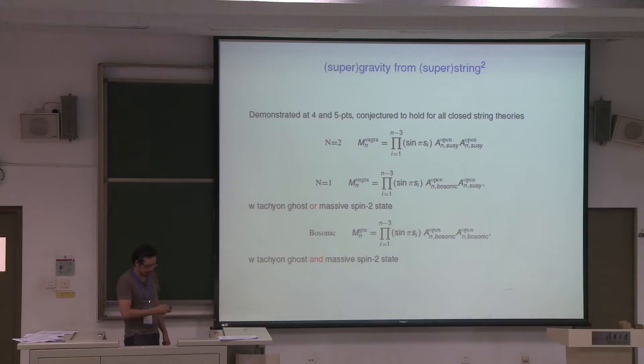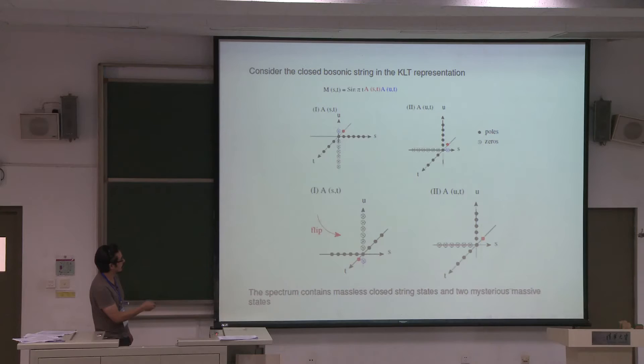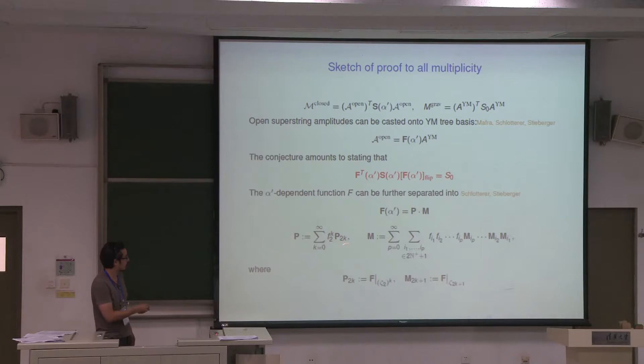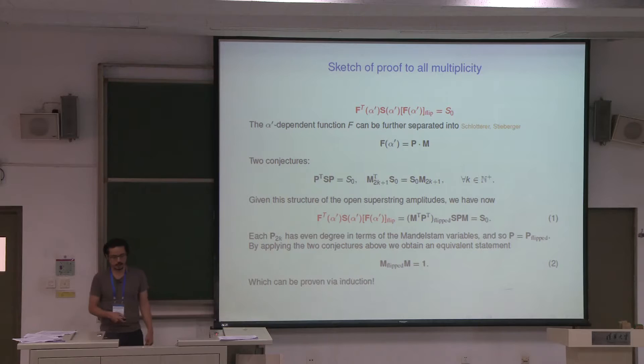So once you do it for the heterotic string, what you get is just usual Einstein gravity coupled to a massive spin-2 state. For the bosonic string, you get the tachyon ghost and the massive spin-2 state — both. I was illustrating this using just a 4-point amplitude, but the important fact is that this is actually true for arbitrary points. We essentially have a proof that this flipping operation gives you the correct supergravity amplitude to arbitrary point.